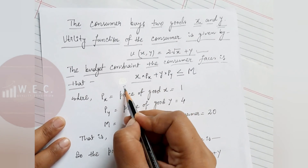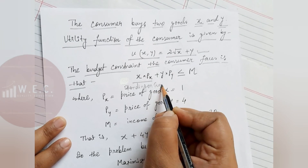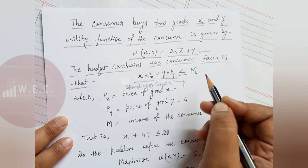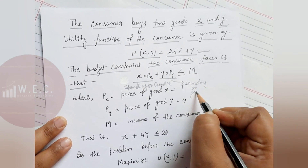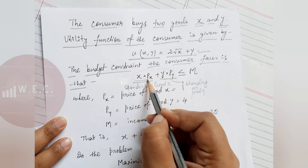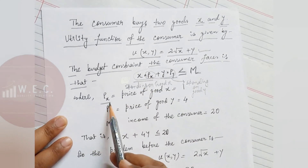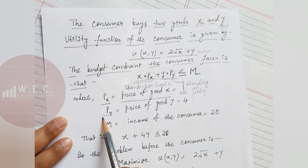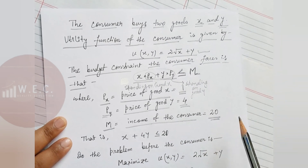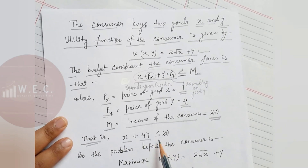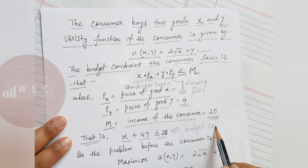The consumer faces the budget constraint: x·px + y·py ≤ m, where x·px is the spending on good x and y·py is the spending on good y. Total expenditure on both goods must be less than or equal to m, the money income of the consumer. Here px = 1, py = 4, and m = 20, so the budget constraint becomes x + 4y ≤ 20.